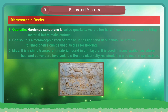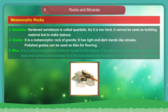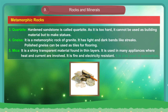3. Quartzite. Hardened sandstone is called quartzite. As it is too hard, it cannot be used as building material but can be used to make statues. 4. Gneiss. It is a metamorphic rock of granite. It has light and dark bands like streaks. Polished gneiss can be used as tiles for flooring. 5. Mica. It is a shiny transparent material found in thin layers. It is used in many appliances where heat and current are involved. It is fire and electricity resistant. It is also used in spaceships.